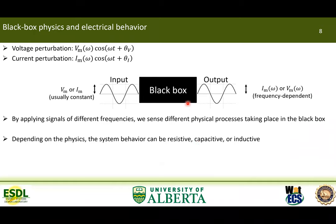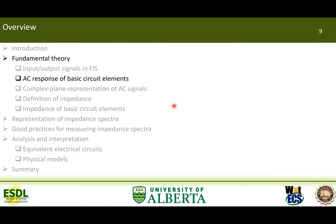By applying signals of different frequencies, we sense different physical processes taking place in the black box. Depending on the physics, the overall behavior can be resistive, capacitive, or inductive. To understand what that means, we need to see how resistors, capacitors, and inductors respond to AC signals and what physical processes those elements represent.